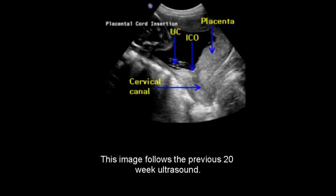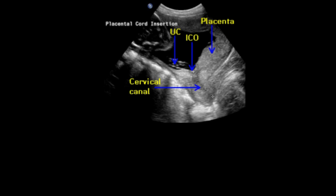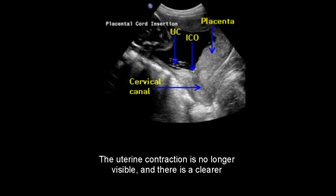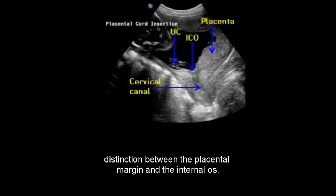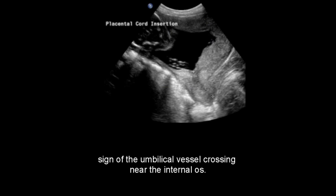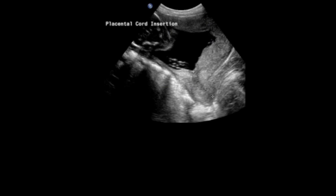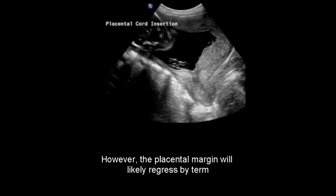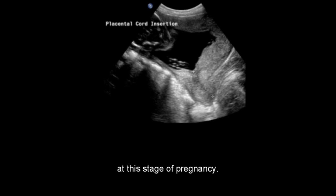This image follows the previous 20-week ultrasound. The uterine contraction is no longer visible, and there is a clearer distinction between the placental margin and the internal os. The umbilical cord is located in the lower uterine segment, but there is no sign of the umbilical vessel crossing near the internal os. A transvaginal ultrasound is recommended; however, the placental margin will likely regress by term at this stage of pregnancy.